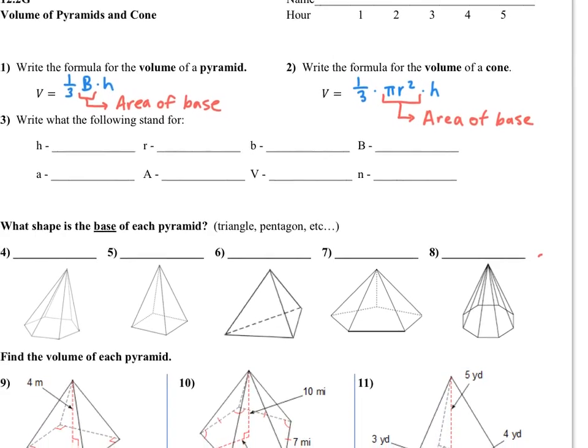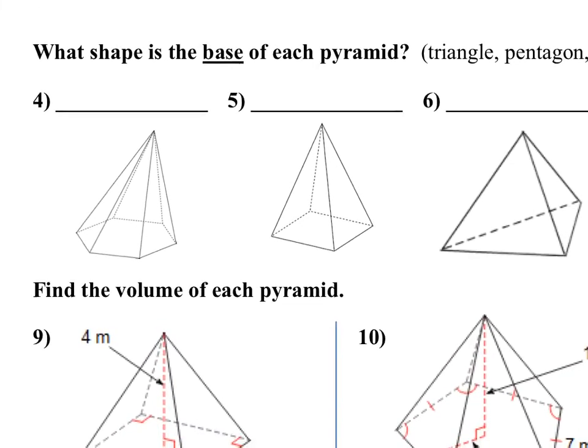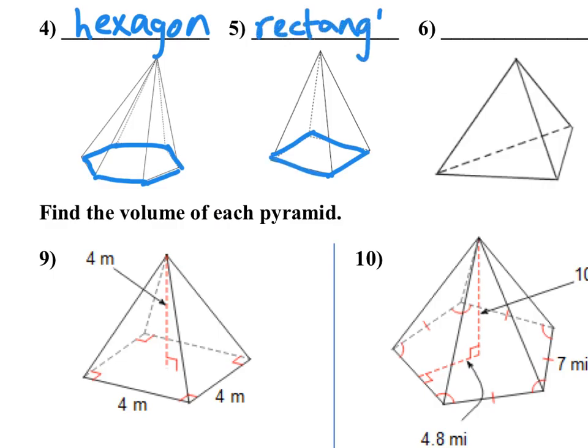So since these deal heavily with area of the base again, let's do a couple where we identify what kind of base we have. The base is going to be the side in a pyramid or a cone that is opposite of the point. So that would be the base right there, and you can see that that has 6 sides, so it's a hexagon base. In number 5, you can tell that it's a rectangle, 4 sides. And in number 6, we've got 3 sides, that is a triangle.